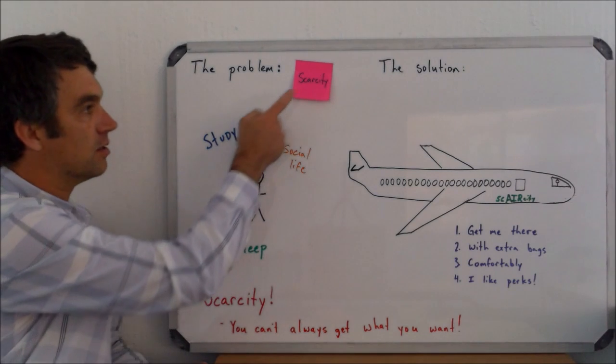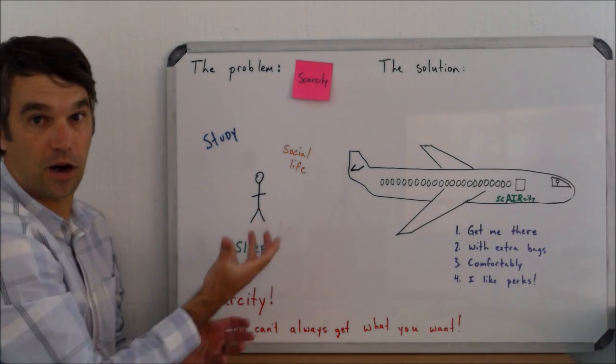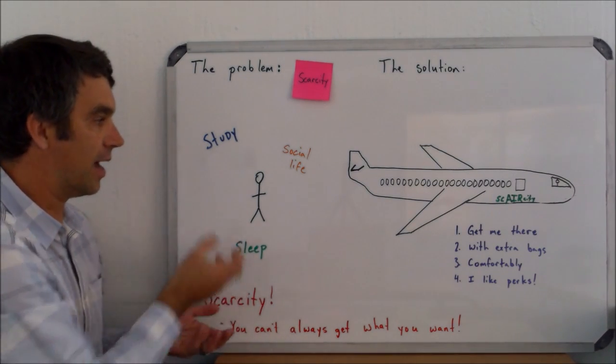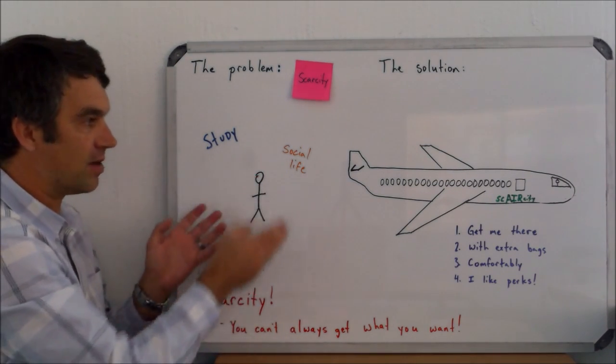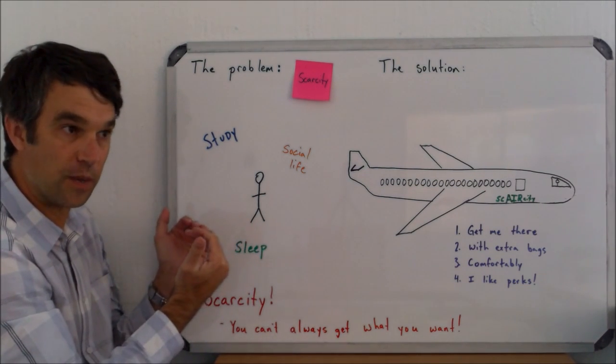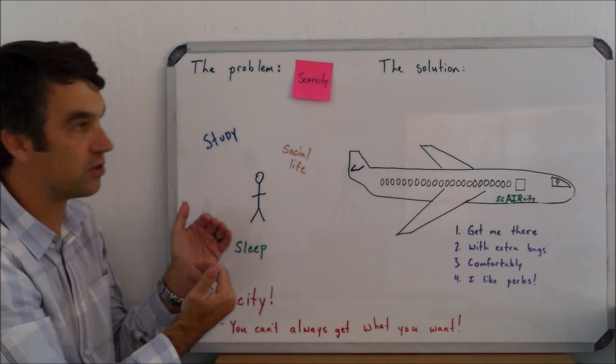The problem is you have these unlimited wants, but your resources are scarce. Your resources as a student are pretty much your study time or your free time. So, with your free time, what this is implying is that you can't do all three. So, then you have to prioritize your choices and think about what do I want the most, the second most, and third most.